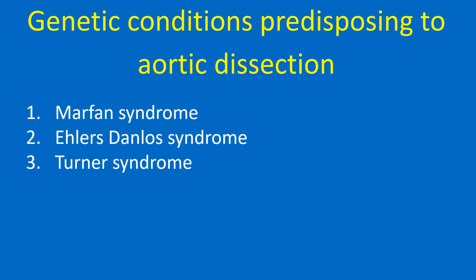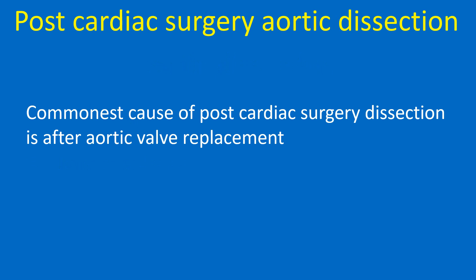Genetic conditions predisposing to aortic dissection include: 1. Marfan syndrome, 2. Ehlers-Danlos syndrome, and 3. Turner syndrome. Regarding post-cardiac surgery aortic dissection, the commonest cause is dissection following aortic valve replacement.